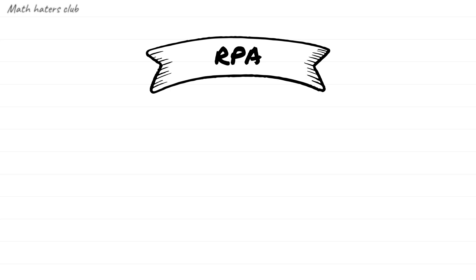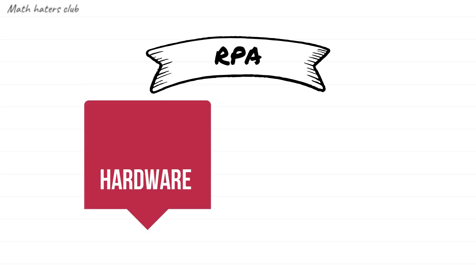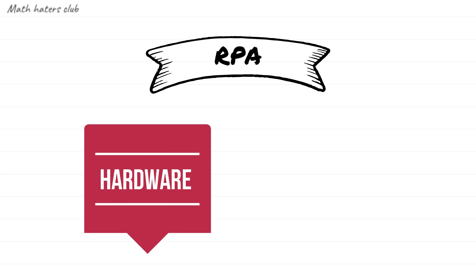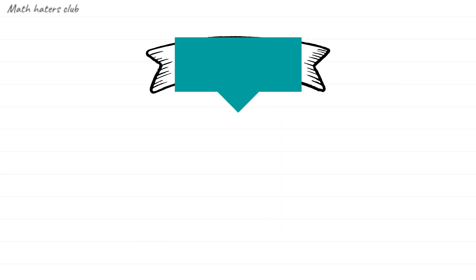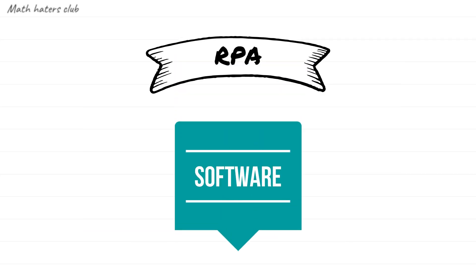Automation is here, but what is it? People are doing a lot of work with machines. There are two types: one is Hardware Automation, and one is Software Automation. We will talk about Software Automation.